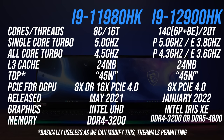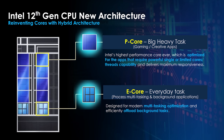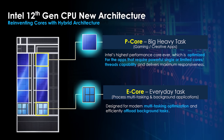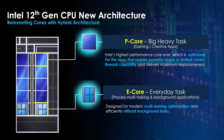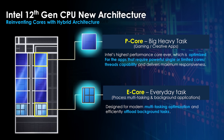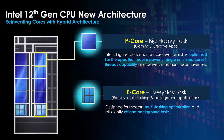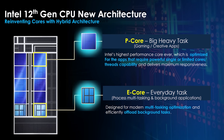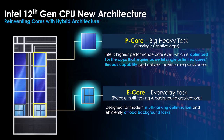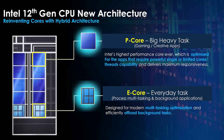The biggest change with 12th gen is the move to a hybrid architecture with P and E cores. P cores or performance cores are basically your regular cores as we've had before with hyperthreading, and this is basically what the older 11th gen has too. The new E cores or efficient cores are smaller, lower-powered cores that handle less important background tasks, and these do not have hyperthreading.